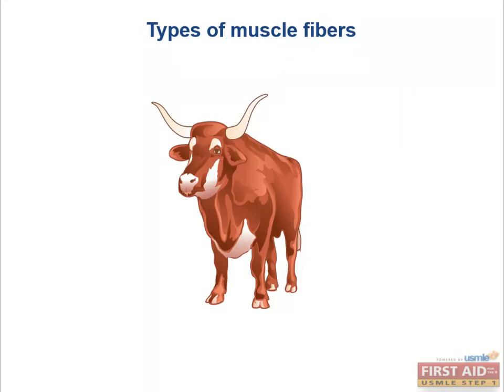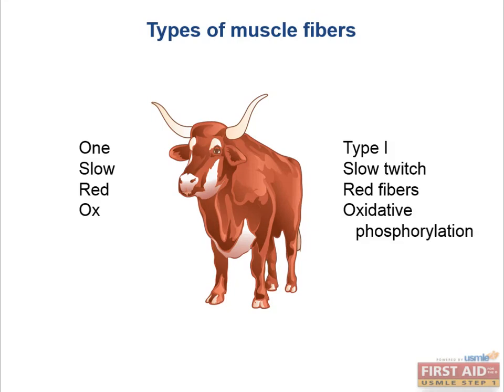Type 1 fibers are slow twitch, and you can remember everything you need to know about them with the memory aid: 1 slow red ox. That is, they are slow twitch, they are red fibers meaning they have a lot of mitochondria and myoglobin, and ox, which means they utilize the full oxidative phosphorylation pathway in their mitochondria. Which metabolic pathway — glycolysis or oxidative phosphorylation — would the white fibers rely more on? You said glycolysis? You're right. As you'll remember from the biochem chapter, glycolysis is much less efficient and requires a significantly higher amount of glucose input per ATP generated than oxidative phosphorylation.